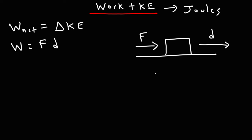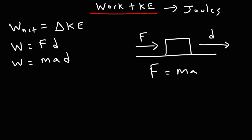According to Newton's second law, we know that the net force, which in this example is simply F, is equal to MA. So we're going to replace F with MA. So we get this formula: work is MAD.